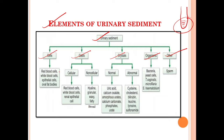Cells में आपको red blood cells, white blood cells, epithelial cells, and oval fat bodies देखने को मिल सकते हैं। Cellular casts में red blood cell casts, white blood cell casts, और renal epithelial cell casts होते हैं। Non-cellular casts में hyaline, granular, waxy, और fatty casts होते हैं। Crystals दो तरह के होते हैं — normal और abnormal। Normal crystals: uric acid, calcium oxalate, amorphous urates, calcium carbonate, phosphate, और urates। Abnormal crystals: cystine, cholesterol, bilirubin, leucine, tyrosine, और sulfonamide।